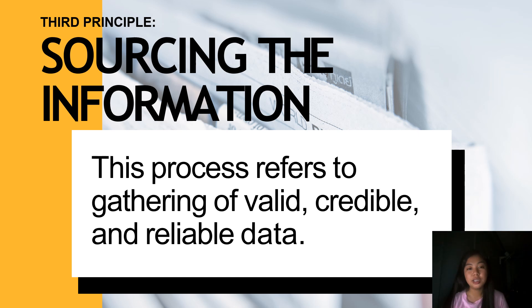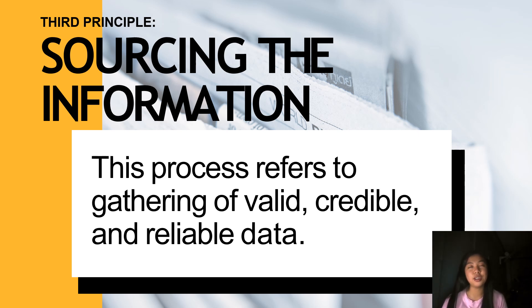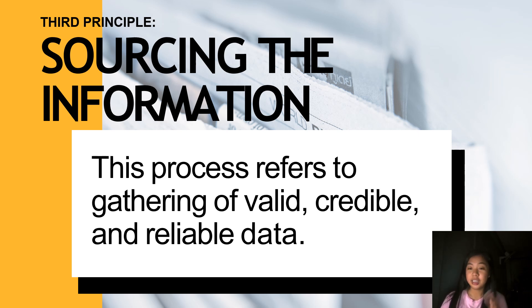The third principle is sourcing the information. This process refers to gathering and collecting valid, credible, and reliable data. To effectively source information, you have to identify credible resources such as academic journals and reputable websites. You have to conduct thorough research and evaluate sources for credibility, because once you include something in your paper without fact-checking, it could compromise your speech.